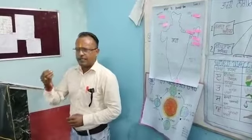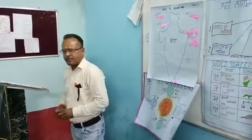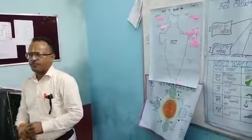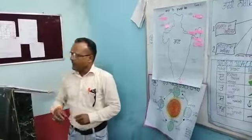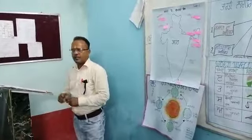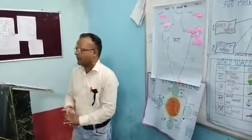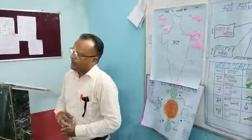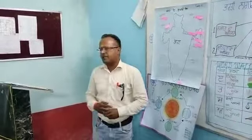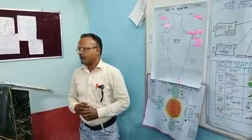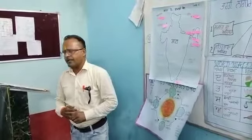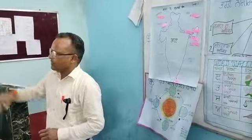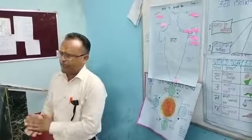Its national river is Manas, its national bird is Raven, and its national sport is Archery. Today's prime minister and its currency also have very different names.